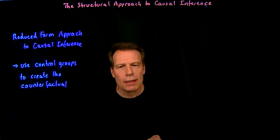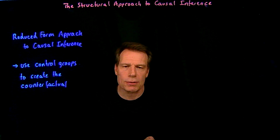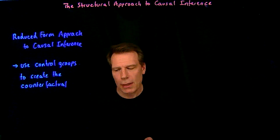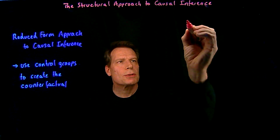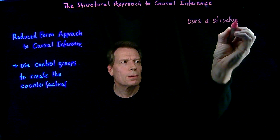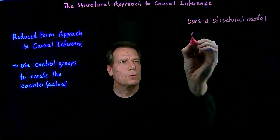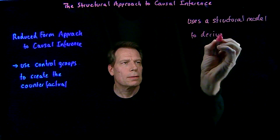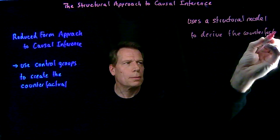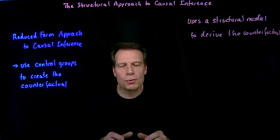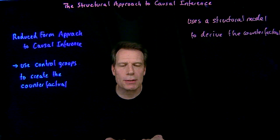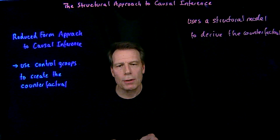They use that model to try to ascertain whether the decisions Kennedy would have made would have caused us to be involved in the war in Vietnam. What historians are using is what we call a structural approach to causal inference — a structural model to derive the counterfactual. Historians typically use verbal reasoning to create that counterfactual, while scientists and economists typically use mathematical models.